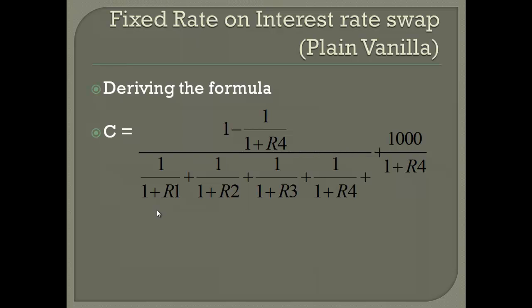When we talk about a fixed rate on an interest rate swap, the market has various spot rates. If you want to compute the constant coupon — for example, a semi-annual coupon — it is derived using a specific formula. This formula gives you the equivalent fixed coupon such that there is no possibility of arbitrage against the floating rate coupon. R1, R2, R3, R4 would be the spot rates of the four terms.